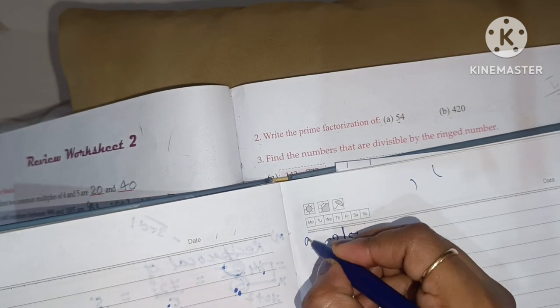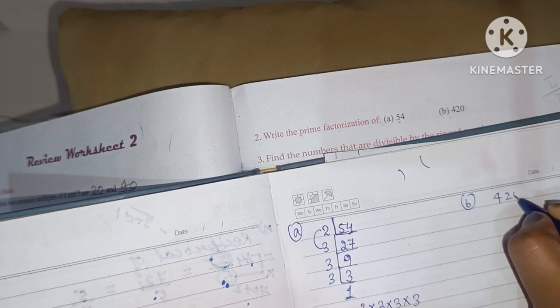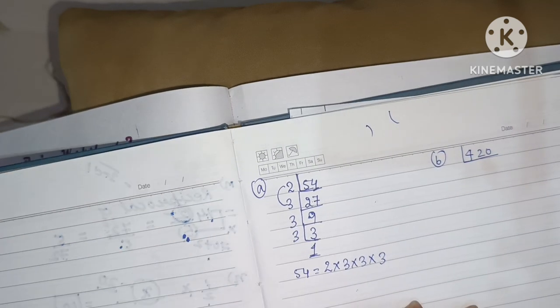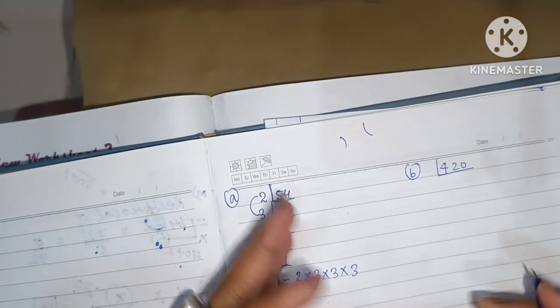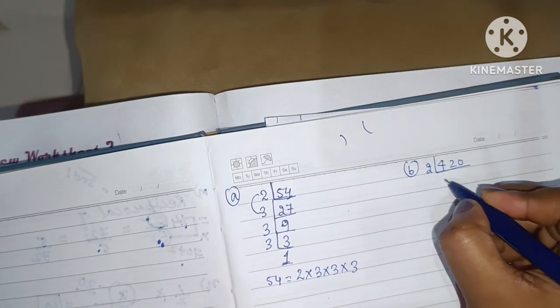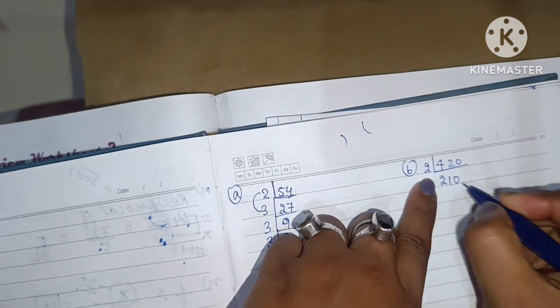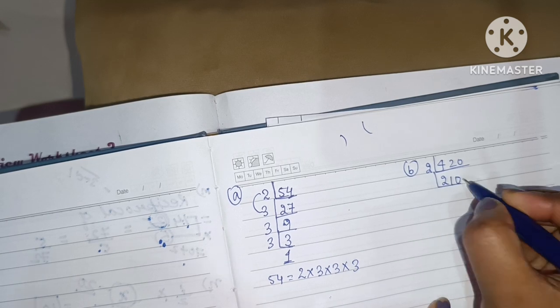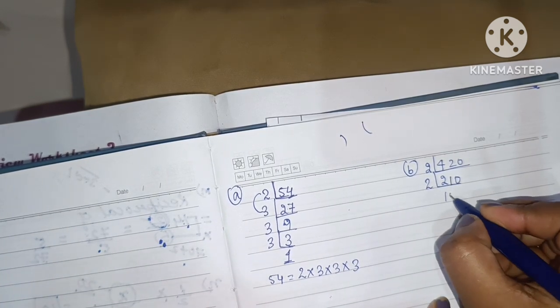Now, number B. 420. Now, you tell me 420 is divisible by which smallest prime number? It is obviously divisible by 2. If we will divide 420 by 2, we will get 210. Now, 210 again is divisible by 2. So, can we write here 105?